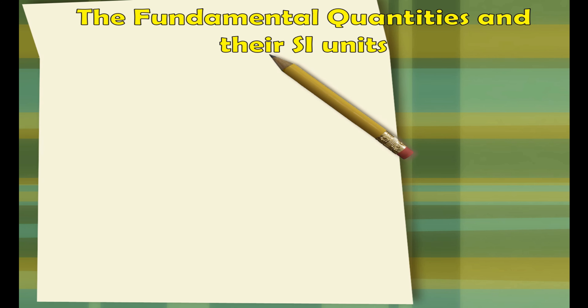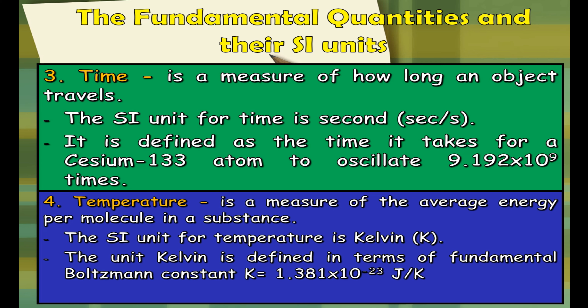Have you heard the question: how long would it take for an object to travel, or how cold or hot an object is? This pertains to SI units number 3 and number 4 — time and temperature. Time is a measure of how long an object travels and has a unit of second, defined as the time it takes for a cesium-133 atom to oscillate, which is 9.192 times 10 raised to 9 cycles. Temperature measures the average energy per molecule in a substance. The SI unit for temperature is kelvin, defined in terms of the fundamental Boltzmann constant k, which is 1.381 times 10 raised to negative 23 joules per kelvin.